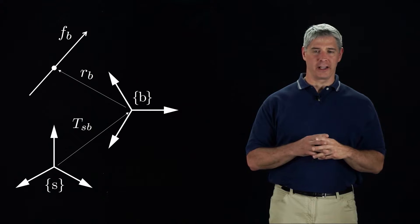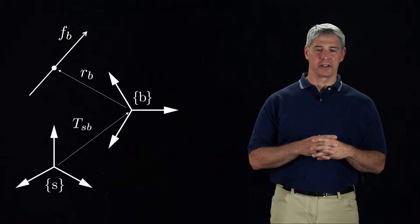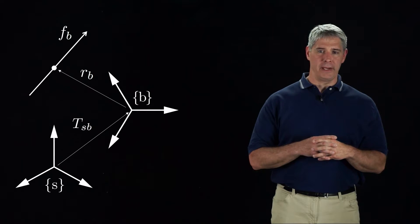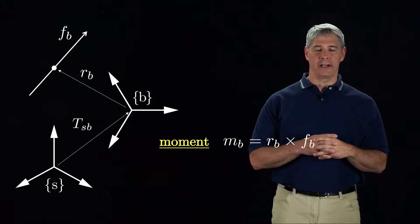FB is a three-vector specifying the magnitude of the force in three directions. From physics, we know that this force induces a three-vector torque, or moment, about the frame B equal to RB cross FB.